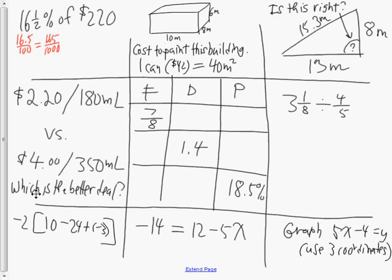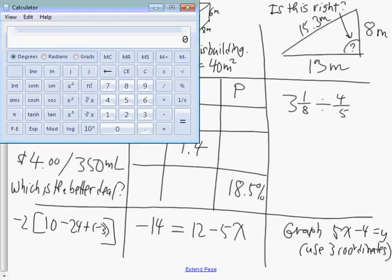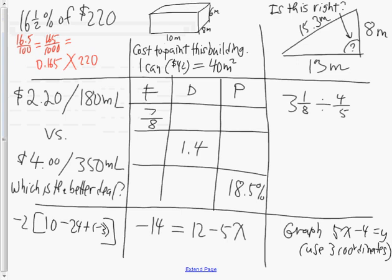So if you see it that way, you could say 165 thousandths of 220. Take your calculator — 165 thousandths of 220 is 36.3, and since it's money, it's $36.30. Make sure you show this work though; that work I showed is important.